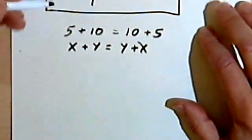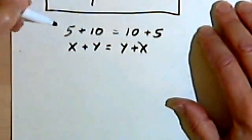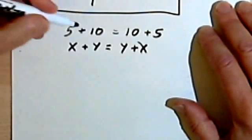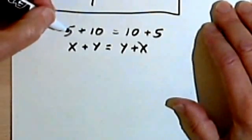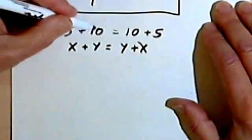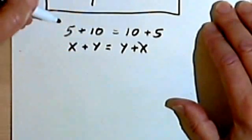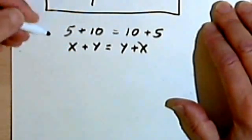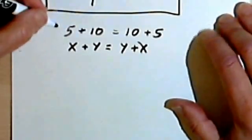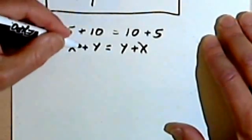So why is it called commutative? Well, when things commute, when people commute, like if they commute to work, they move, they change places. And what we're doing is we're taking these numbers, the 5 and the 10, for instance, or the x and the y, and we're changing their places. So this is the commutative property of addition, because we're dealing with addition.